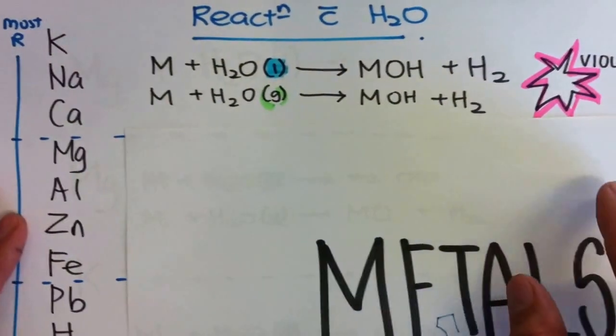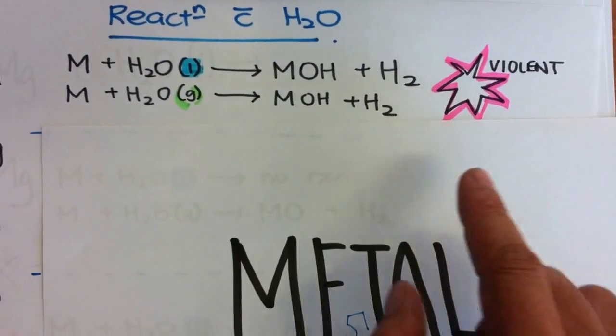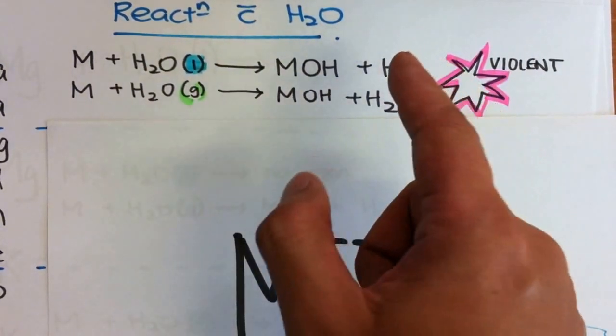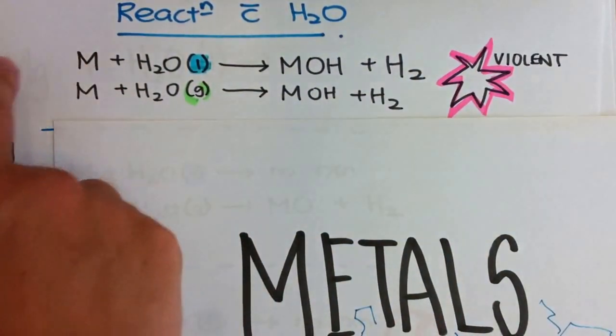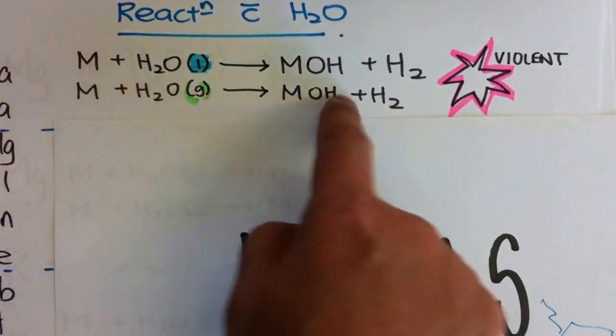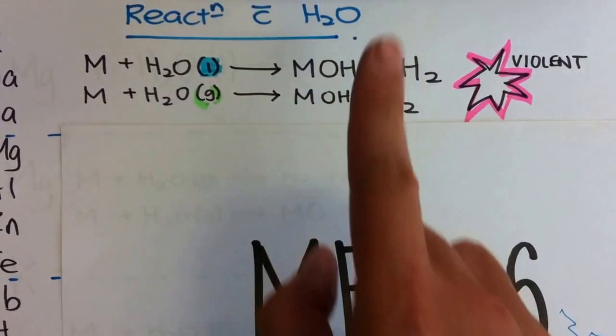However, this reaction is very, very violent because they are so reactive. You probably get an explosion. It's a violent reaction. So we will never put this group of metals in water to get a hydroxide. No, no, that way.